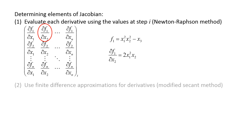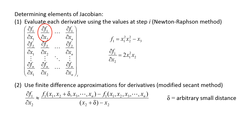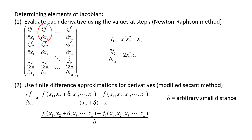The second method involves estimating the partial derivatives using finite difference approximations. Using partial f1 partial x2 as an example: since we want to know the rate f1 changes with x2, we can vary x2 by a small amount delta and calculate f1 at this modified value of x2, then subtract f1 evaluated at the original value of x2. This difference is divided by x2 plus delta minus x2, which simplifies to delta. All the variables x1 through xn are the values at the current step i.